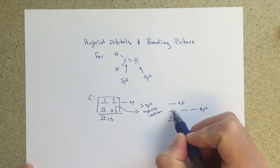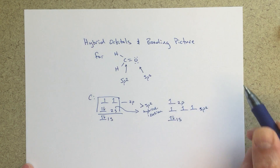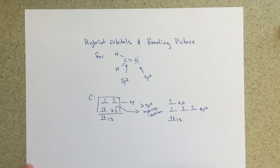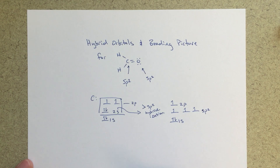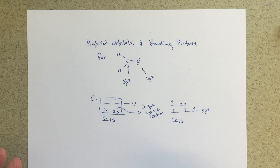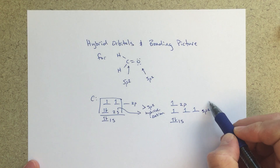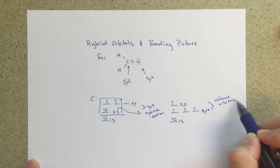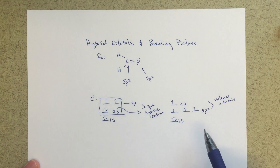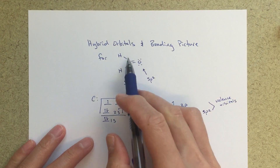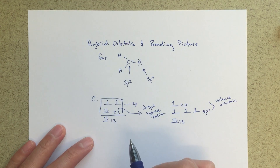Then we're going to fill in our electrons, and we're going to put that extra electron up in the 2p orbital. We'll talk more about why that makes sense in just a minute, but this is the first picture we want to look at. These are our valence orbitals containing our valence electrons — those four electrons are our valence electrons for carbon. Carbon brings four valence electrons to the party, and we need to deal with those four electrons to show how this bonding works in our bonding picture.